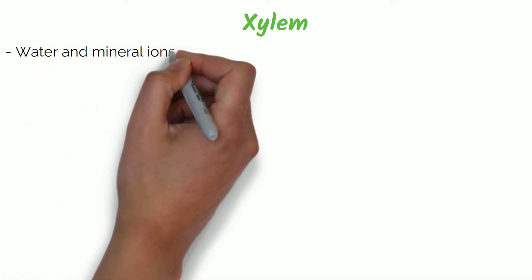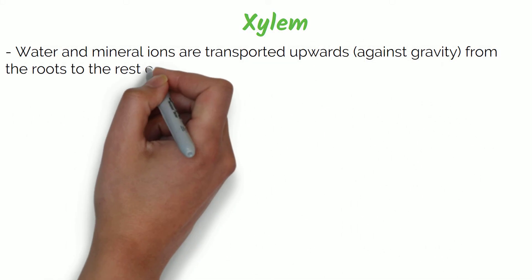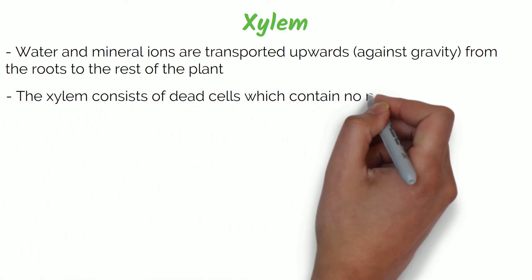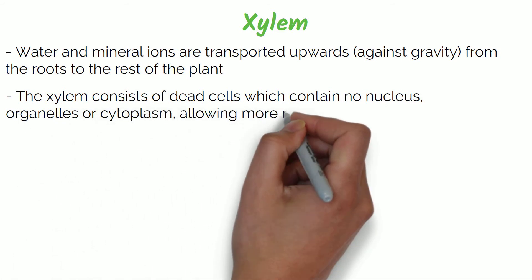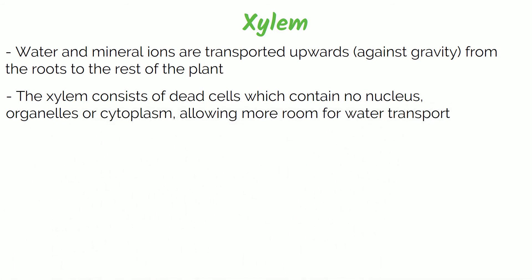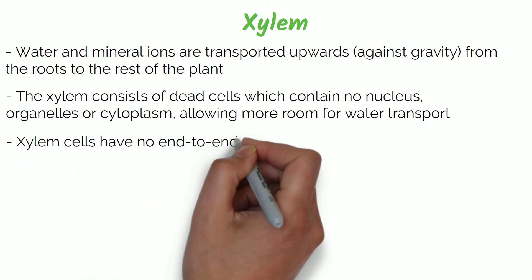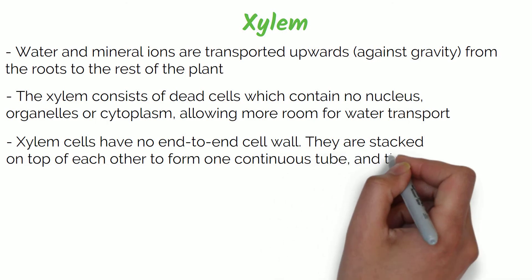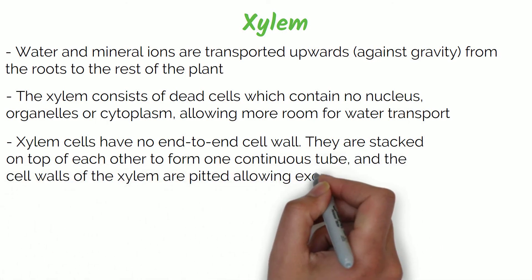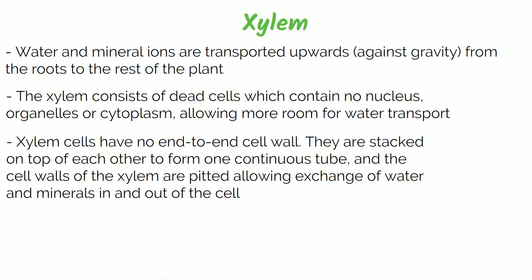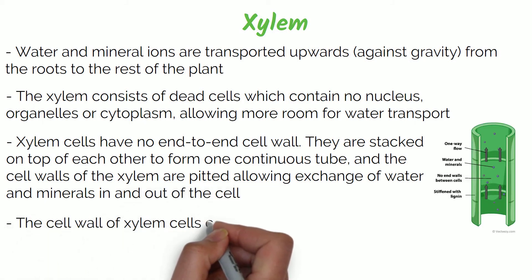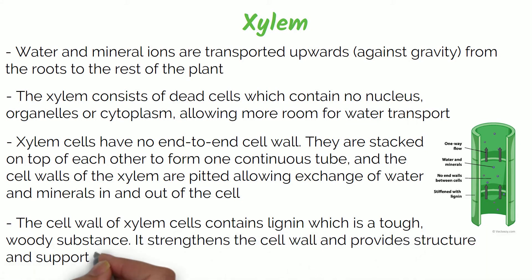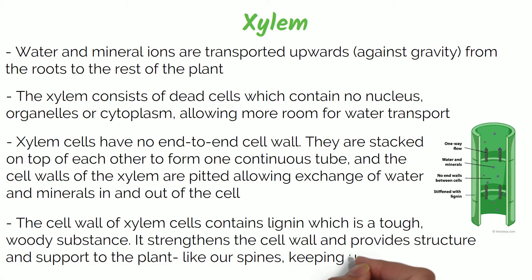Water and mineral ions are transported upwards against gravity from the roots to the rest of the plant. The xylem consists of dead cells which contain no nucleus, organelles and cytoplasm, allowing for more room for water transport. Xylem cells have no end-to-end cell wall and are stacked on top of each other to form one continuous tube. The cell walls of the xylem are pitted, allowing the exchange of water and minerals in and out of the cell. The cell wall of xylem cells contains lignin, which is a tough woody substance that strengthens and provides structure and support to the plant, like our spines keeping us upright and steady.